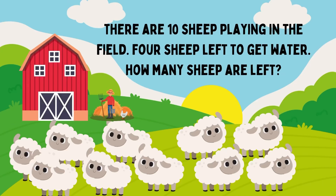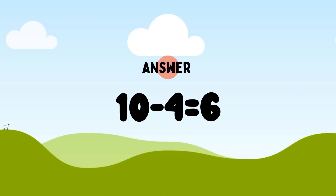Next question. There are 10 sheep playing in the field. 4 sheep left to get water. How many sheep are left? So, total is 10 sheep minus 4 sheep left to get water. 10 minus 4 is equal to 6. So, 6 sheep left.